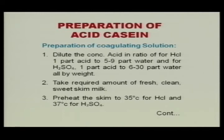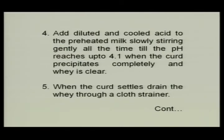Take fresh, clean, sweet skim milk free from any odour. Heat skim milk to approximately 35°C when precipitating with HCl, or to 37°C when using H2SO4. Add diluted and cooled acid slowly while stirring gently until the pH reaches 4.1, at which point the curd precipitates completely and the whey is clear. At pH 4.1, all casein present in the milk is separated out and clear whey is generated.